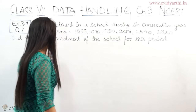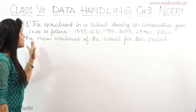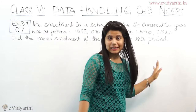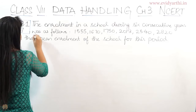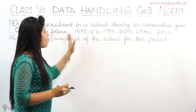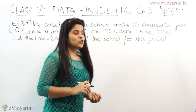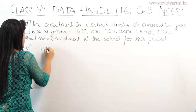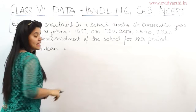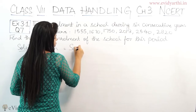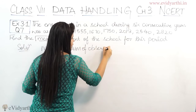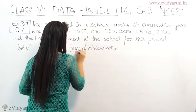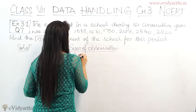This is the data. We need to find the mean enrollment of the school for this period. To find the mean, we use the formula: mean equals sum of observations upon number of observations.